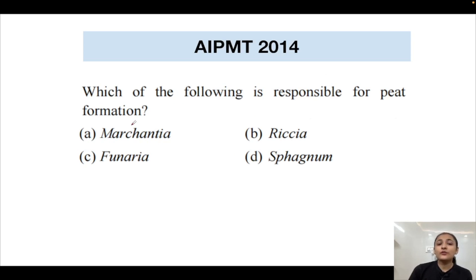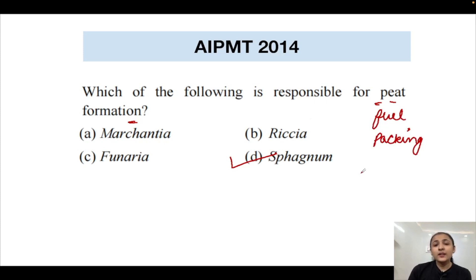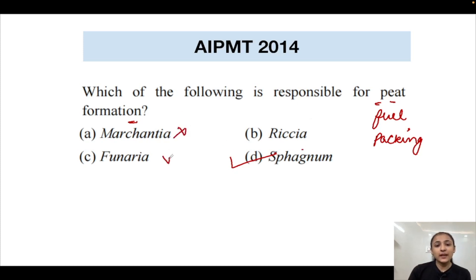Question: Which of the following is responsible for peat formation? We studied in the economic importance of bryophytes that Sphagnum, also known as cotton moss, is responsible for peat formation. Peat is used as fuel and for packing and shipment of living plant materials such as seedlings and plant cuttings, because it has high water holding capacity. The correct answer is option D — Sphagnum.